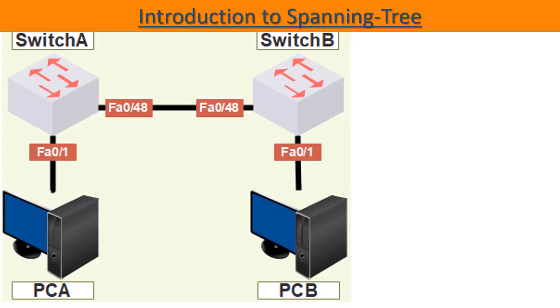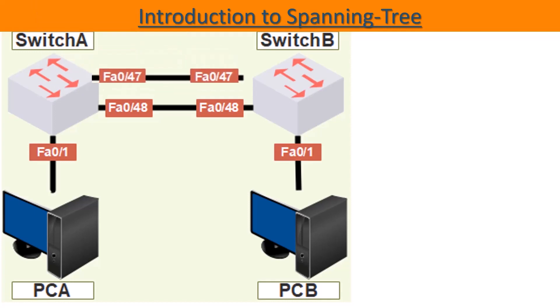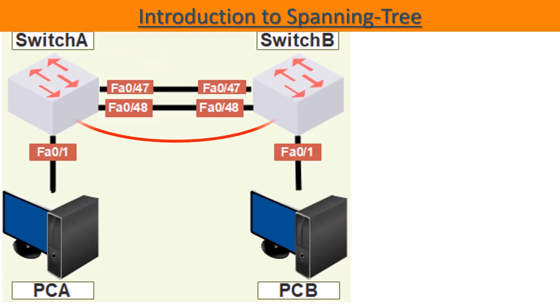In this diagram, if the link between the two switches drops, then the users on switch A will no longer be able to join those of switch B. This is why it is preferable to add another link between the two switches to have redundancy. But as all redundancy brings network loops, now we have one.